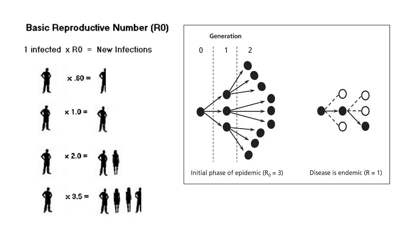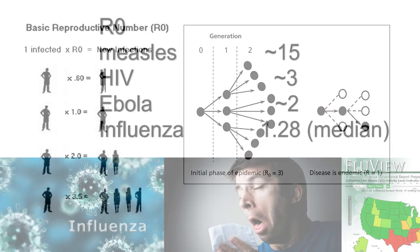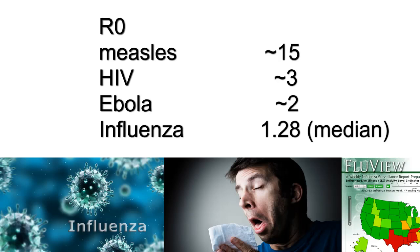The R₀ is generally fixed for a given strain of a given disease. R₀ for measles is around 15, for HIV around 3, and for Ebola around 2. The R₀ for influenza varies somewhat from year to year.